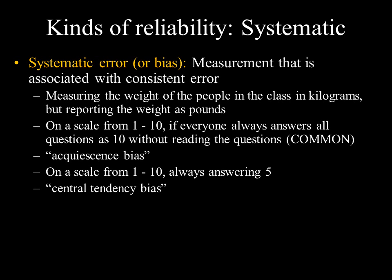Other examples of systematic bias: if on a scale of one to ten everyone always answers ten without reading the question, that's called acquiescence bias. If you ask how someone is feeling and everyone says 'fine,' that's acquiescence bias. Central tendency bias occurs when people always answer five on a one-to-ten scale — for instance, rating happiness as five for everything. These are forms of systemic lack of reliability.